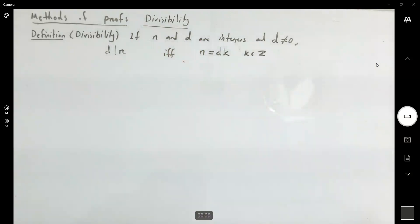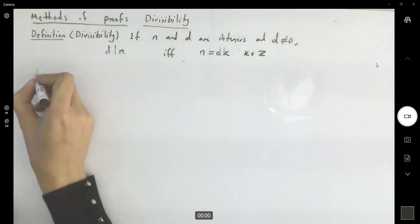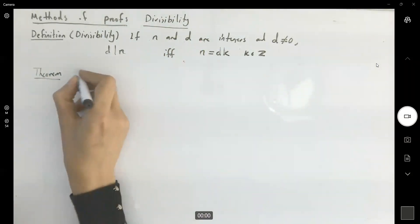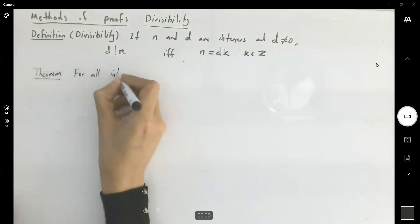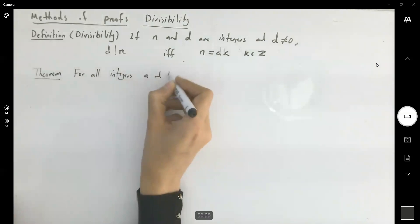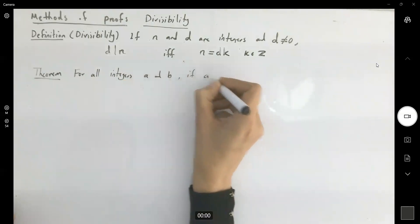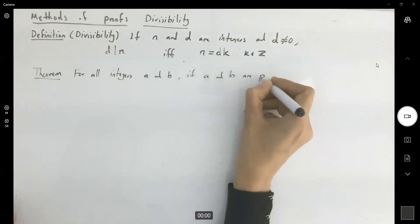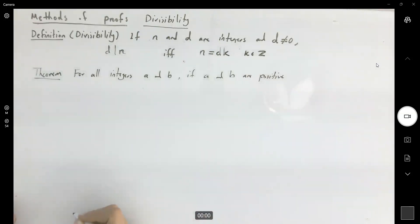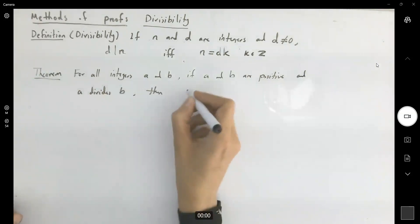Okay, theorem. This theorem says, for all integers a and b, if a and b are positive and a divides b, then a is less than or equal to b.